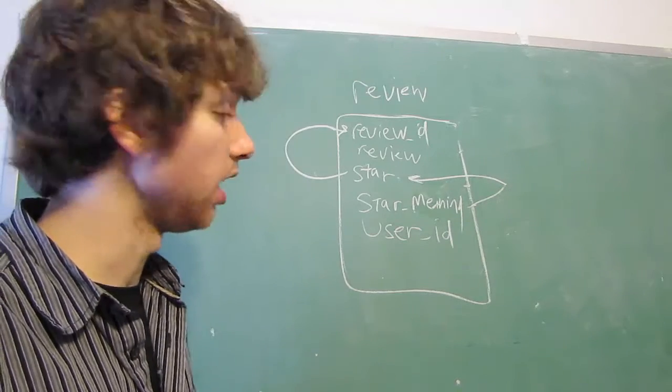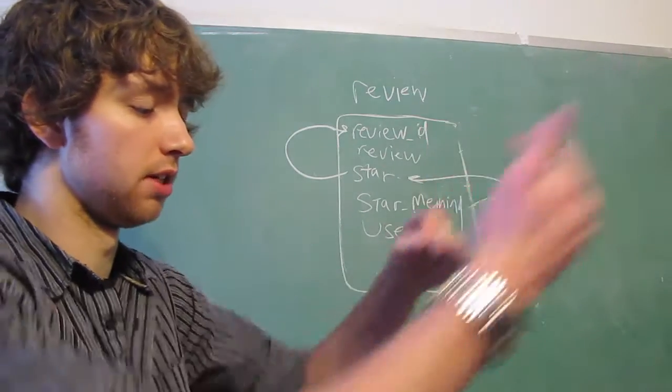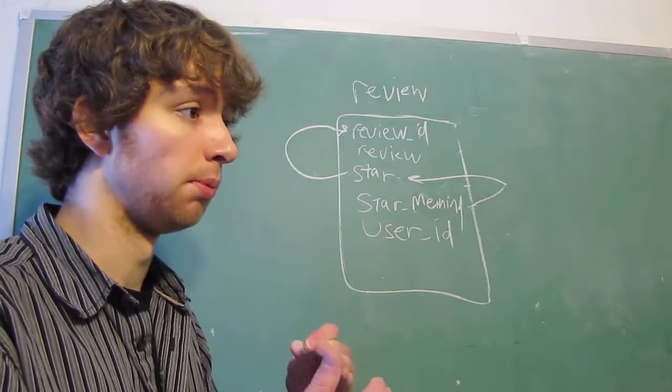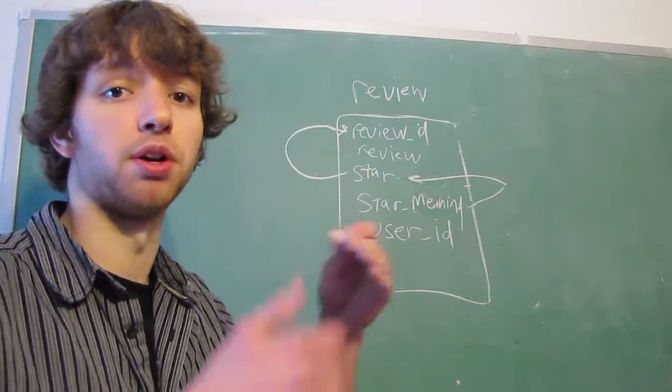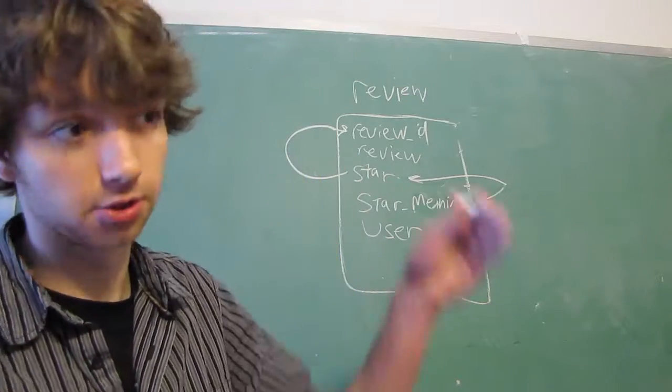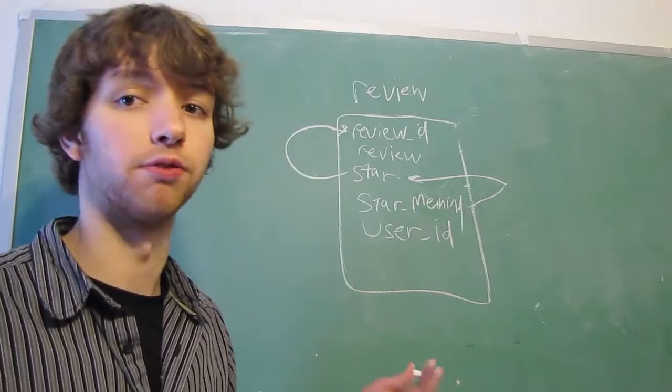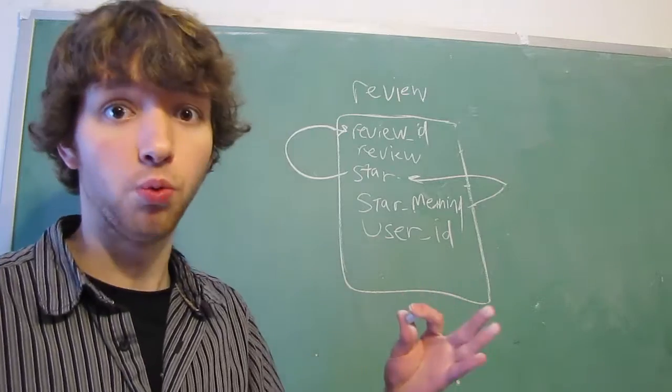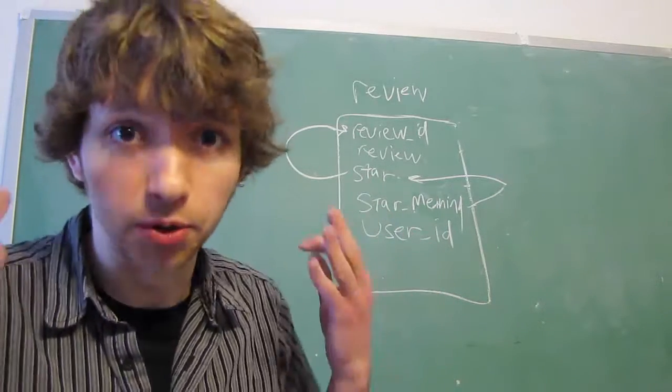Now, you can also have a multiple transitive dependency, which I don't even know what those are called. But that would be where a column depends upon a column, which depends upon a column, which depends upon a column, which depends upon the actual primary key. It can go on forever for as long as you want. But you don't want it because it's bad, which is why we're going to remove it.